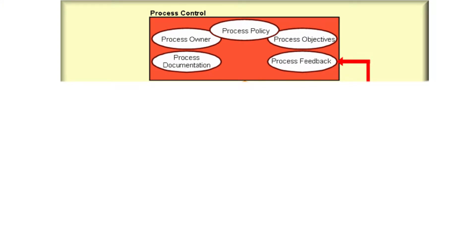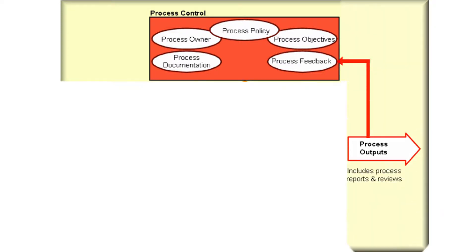Once we have our process control established, the first thing we need to work out — step four — would be our process outputs. What do we want the output from the process to look like? The objective is to restore normal service operation as quickly as possible, so the output is going to be something that's been restored, something that's fixed. Our next step is then to document and define what a restored service would look like.